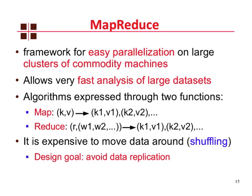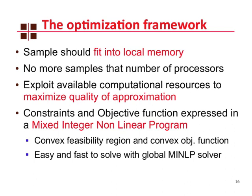One of the goals of our algorithm is to exploit available computational resources while respecting them. So we have two constraints: each sample should fit into the local memory of each machine, and we cannot have more samples to mine than number of processors. We want to exploit the available computational resources in order to maximize the quality of the approximation. Given these constraints and this optimization objective, we can formalize them as a mixed-integer non-linear program. The good thing is that there is a convex feasibility region and a convex objective function, so this is very easy and fast to solve using a global MNLP solver.